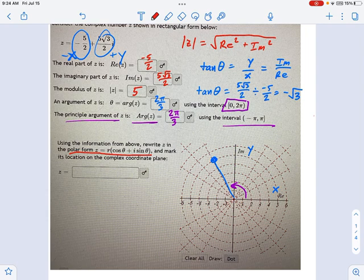We know what r is. r is equal to the modulus of z, which for us is 5. And we know what theta is. We just talked about that. That's 2 pi over 3. That's the argument.